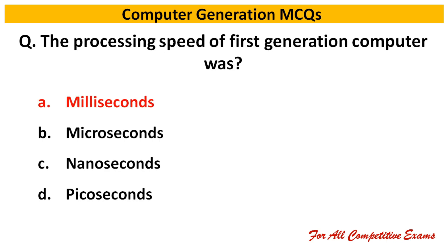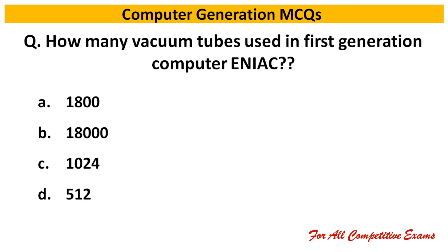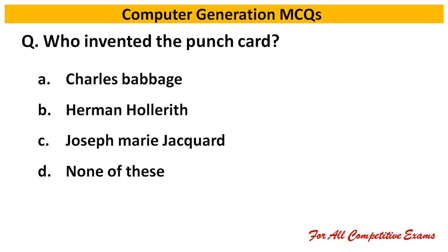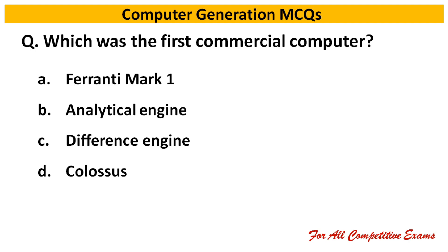Next question: How many vacuum tubes were used in the first generation computer ENIAC? Right answer is 18,000. Next question: Who invented the punch card? Right answer is Herman Hollerith.